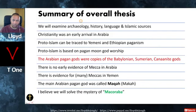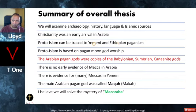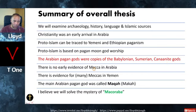Summary of the overall thesis: we will examine archaeology, history, language, as well as the Islamic sources. Christianity was an early arrival in Arabia and had an impact; however, prior to that there was Babylonian paganism. Proto-Islam can be traced to Yemeni and Ethiopian paganism. The Ethiopian paganism was brought there from Yemen. Proto-Islam is based on pagan moon worship. The Arabian pagan gods were copies of the Babylonian, Sumerian, and Canaanite gods.